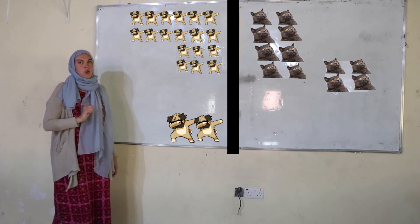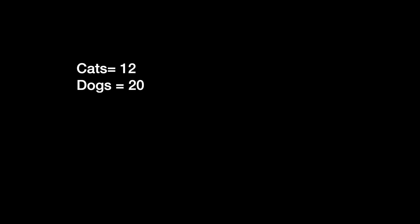We don't actually know the total number of pets yet. Let's start by figuring that out. Let's add our 12 cats to our 20 dogs. We get a total of 32. 32 total pets in our shelter.